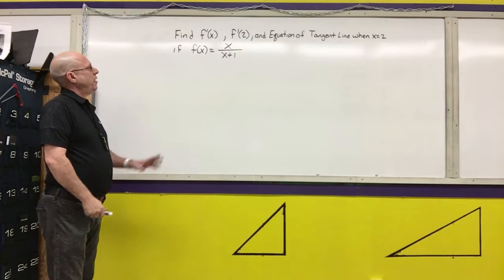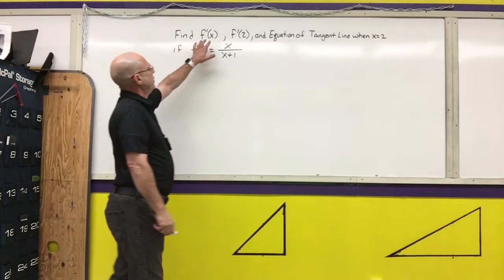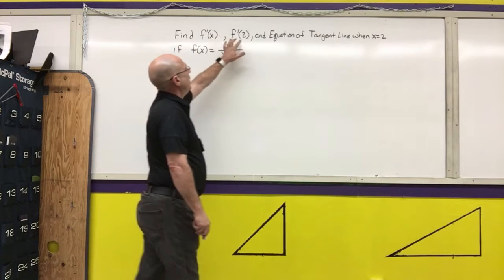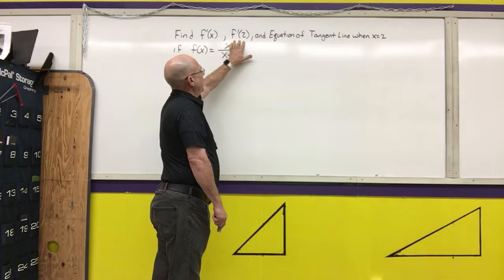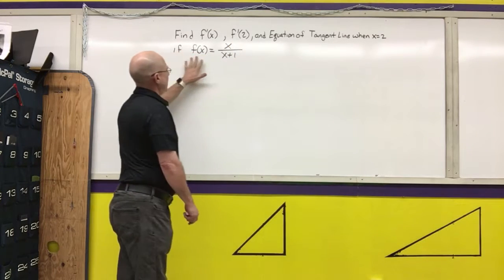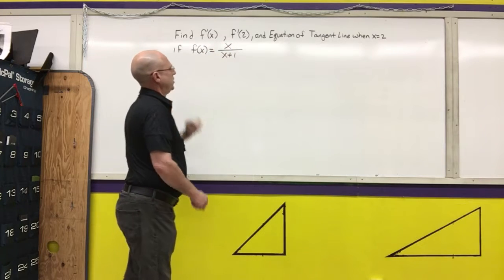I'm going to do one more example of a homework type problem. The instructions are: find the derivative of x, which is a function, find the derivative at when x equals 2, and the equation of the tangent line when x equals 2 for the function f of x equals x over x plus 1.